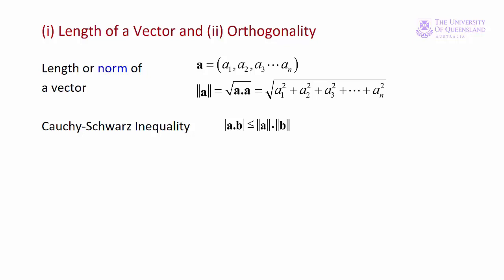Before finishing up with an example, we'll consider two concepts associated with vectors. The first is the length or norm of a vector. If we have vector A, we represent the length of A by putting two vertical lines either side of the vector. The length of a vector is just the square root of the dot product of the vector with itself.